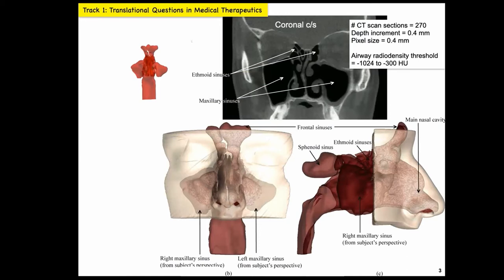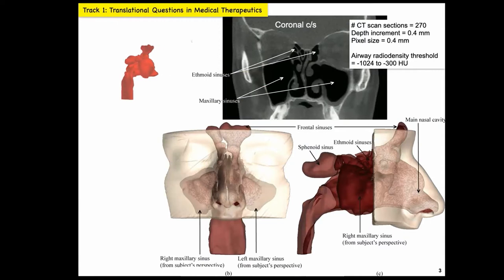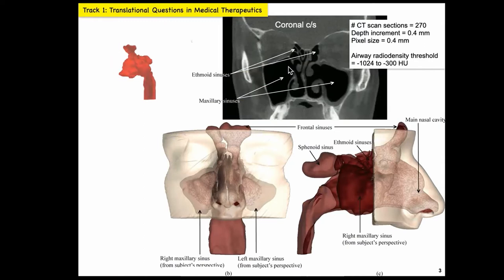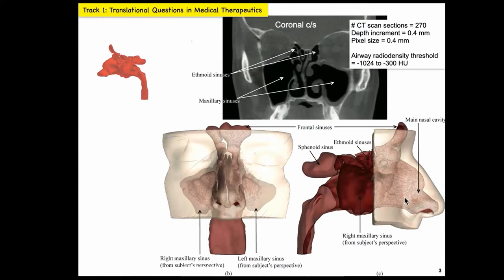Regardless of which project I discuss, when I'm using fluid mechanics analysis tools in clinical domains, we typically always start from medical imaging data — CT scans or MRI data. We use those scans to build anatomically realistic models. For example, here you can see a CT scan slice. Typically we collect around 250 to 300 such slices if we're trying to reconstruct the nasal airway of a person. We digitally stack them up to build models like the ones you see at the bottom.